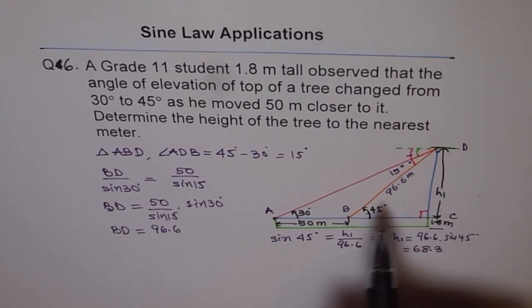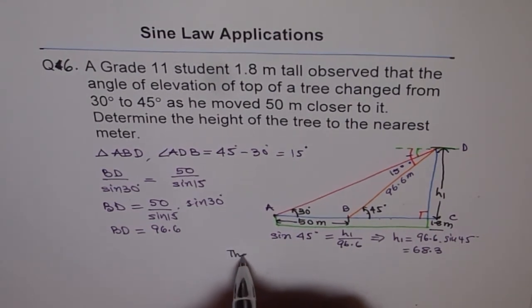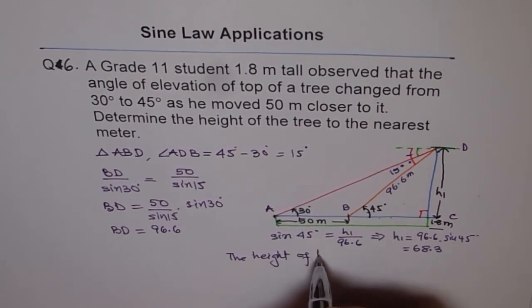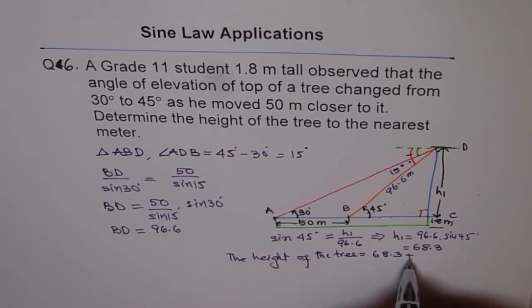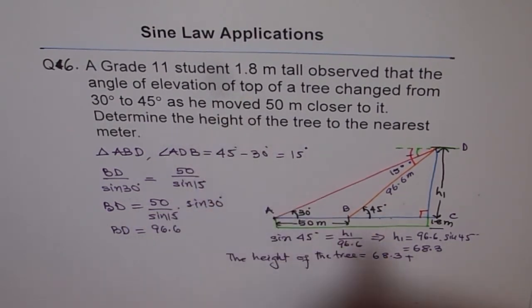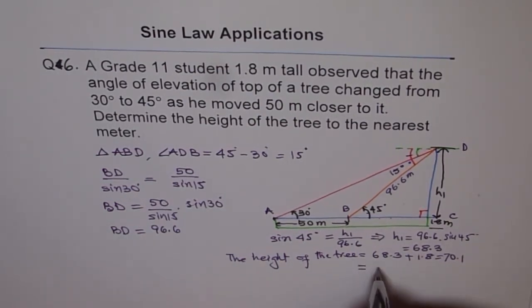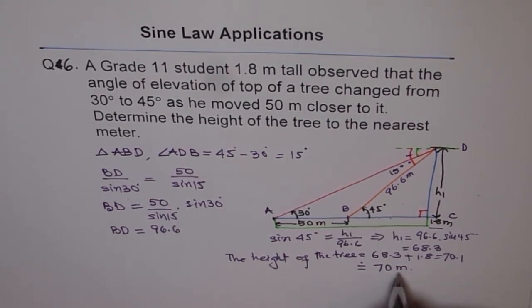Now, so that is the height from the eye level. So the total height is, the height of the tree equals to 68.3 plus 1.8. So we'll add 1.8 to it. And so we find 70.1. And so we say height of the tree is approximately 70 meters. So that is the answer.